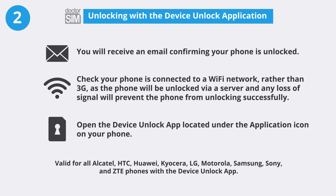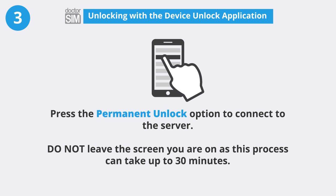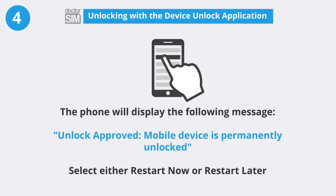Open the Device Unlock app located under the application icon on your phone. Press the Permanent Unlock option to connect to the server. Do not leave the screen you are on, as this process can take up to 30 minutes. The phone will display the following message: Unlock approved, mobile device is permanently unlocked.